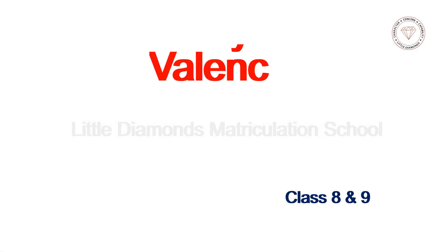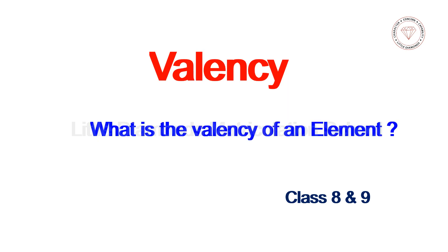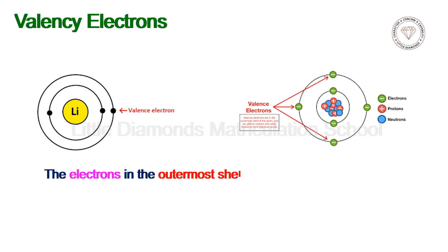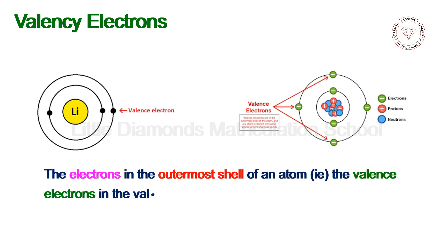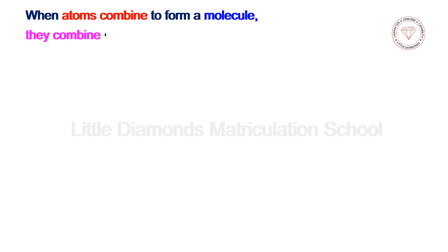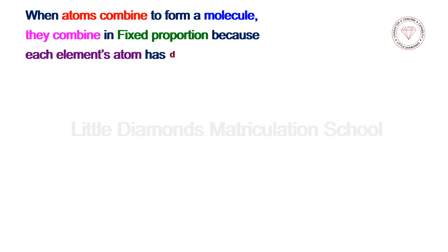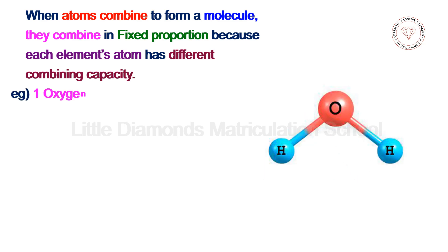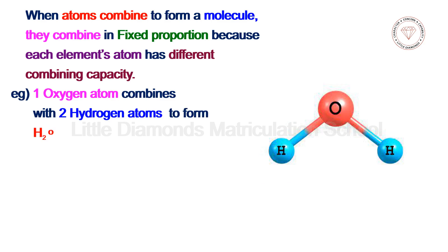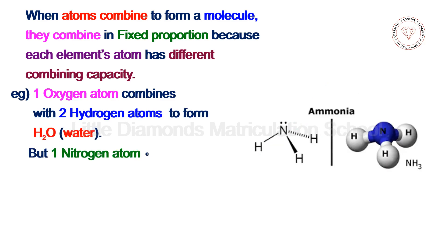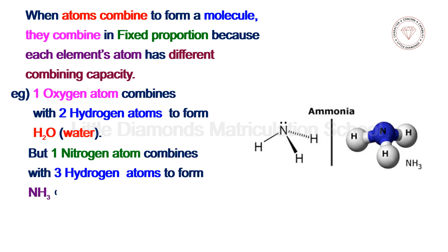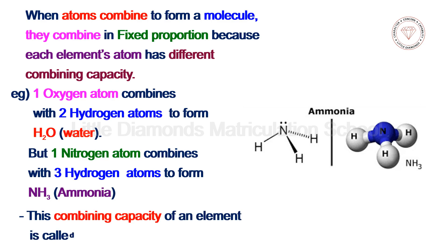Valency — what is the valency of an element? We have already learned about valence shell and valence electrons — the electrons in the outermost shell of an atom. When atoms combine to form a molecule, they combine in fixed proportions because each element's atom has a different combining capacity. For example, one oxygen atom combines with two hydrogen atoms to form water (H₂O), and one nitrogen atom combines with three hydrogen atoms to form ammonia (NH₃). This combining capacity of the atoms of an element is called the valency of the element.